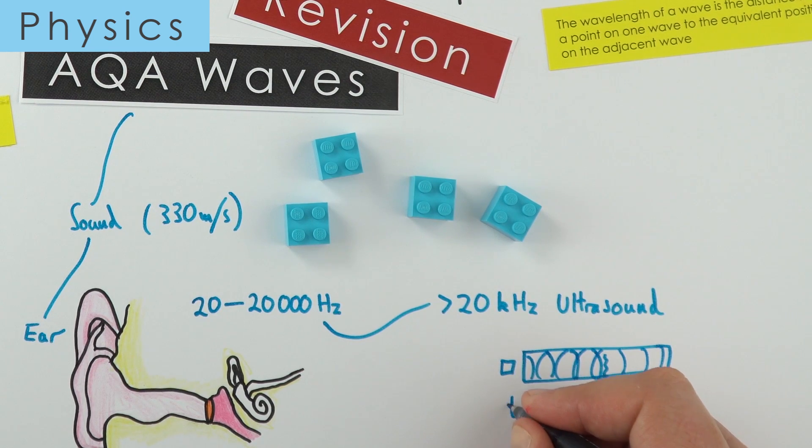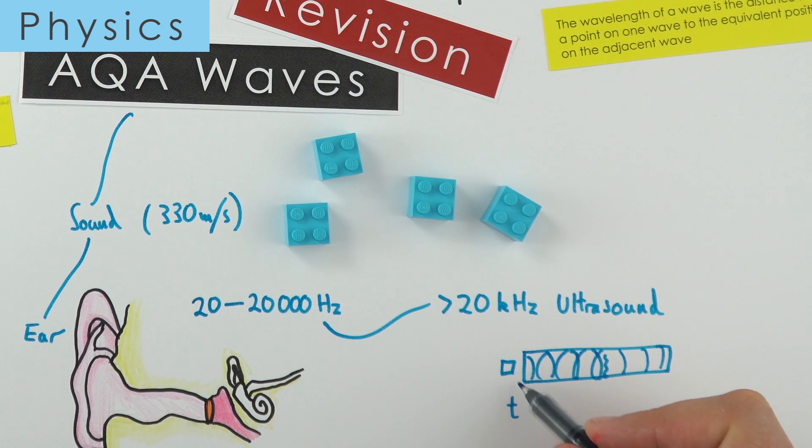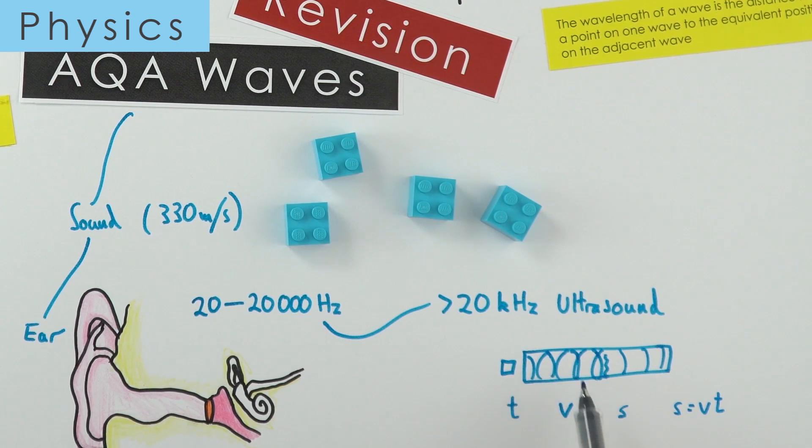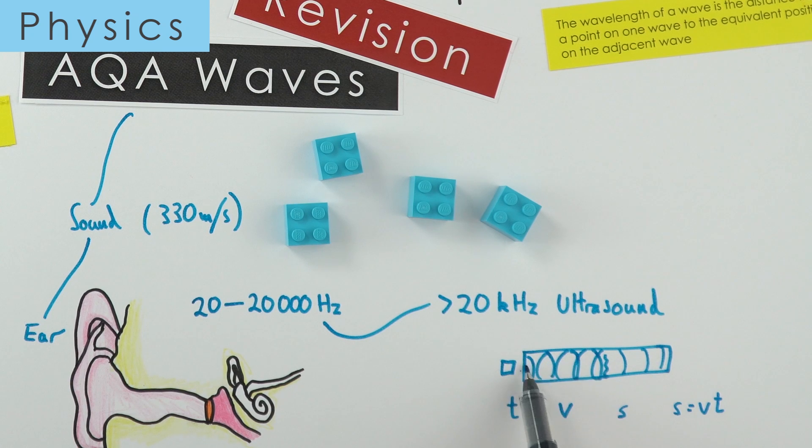We can actually record the time that the detector works out when the signal is coming back. If we know the time it takes and we know how quickly these ultrasound waves travel through that material, we can work out the distance using S equals VT. The careful thing is that's the distance to and from the obstruction, so you'd have to divide that by two to find the actual distance.